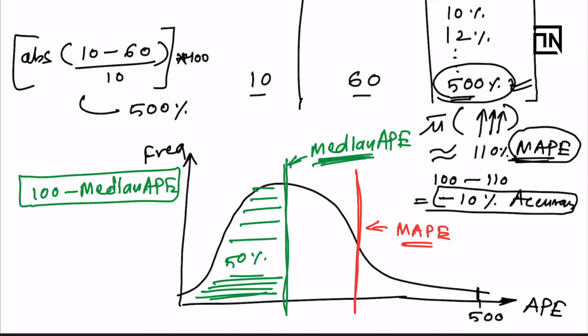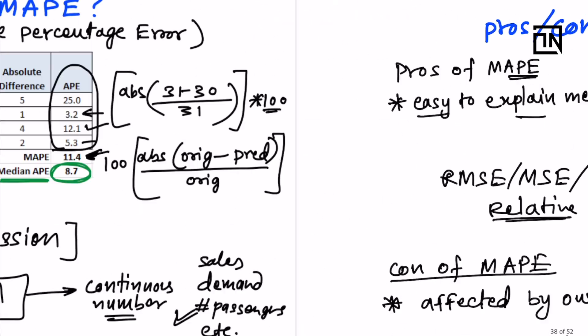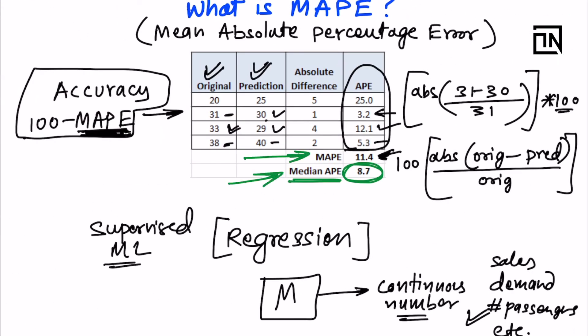Practically speaking, we always look at the median value and mean value in contrast to each other, and make sure they are not too far apart. If they are too far away, we have serious outlier issues in our data. So whenever we compute MAPE, we also compute median APE and compare the two. In an ideal world — a bell curve of errors — MAPE and median APE will be exactly the same. If there are very large errors, the median APE will be smaller and the mean APE will be much higher.